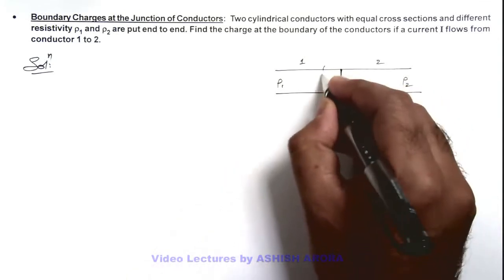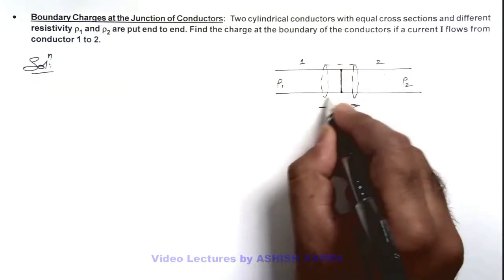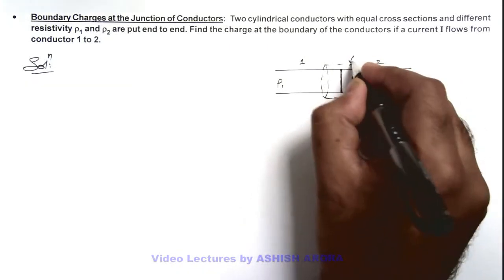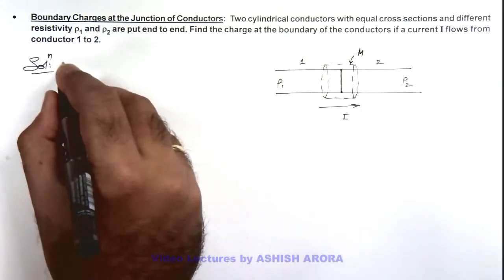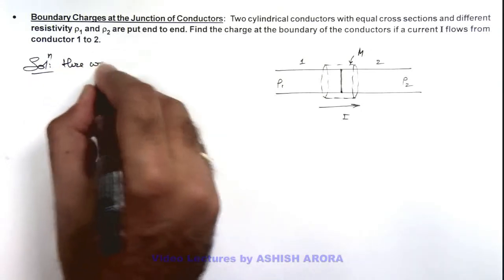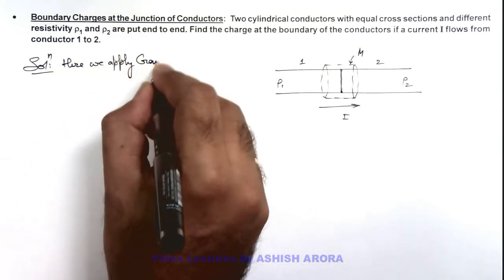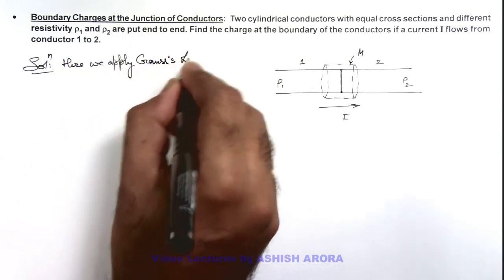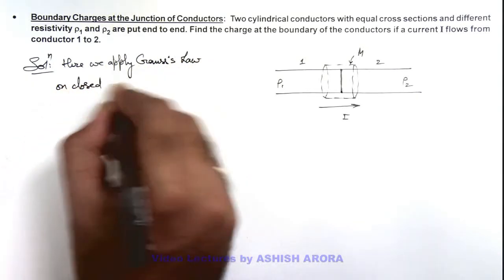For this, we apply Gauss's law on this small surface, and we name this surface as M. Here we can write: we apply Gauss's law on closed surface M.